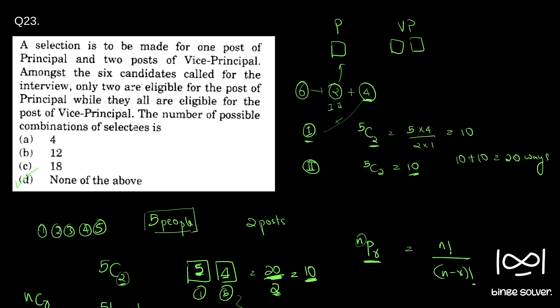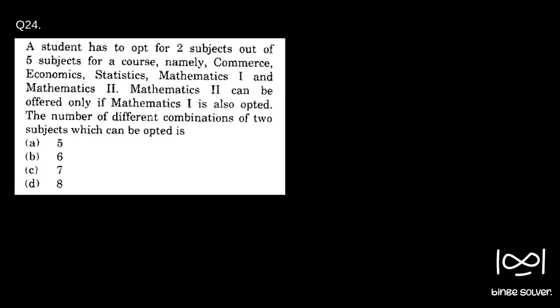Moving on to question 24. A student has to opt for 2 subjects out of 5 subjects for a course, namely: Commerce, Economics, Statistics, Mathematics 1, and Mathematics 2. Mathematics 2 can be offered only if Mathematics 1 is also opted. The number of different combinations of two subjects which can be opted is...